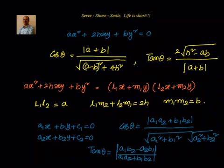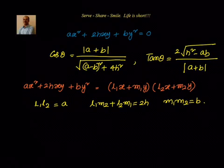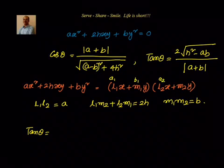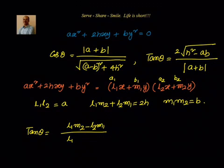Comparing our lines with the general form, we have a1 = l1, b1 = m1, a2 = l2, b2 = m2. We will take tan θ as it is easier. So tan θ = (a1·b2 - a2·b1) / (a1·a2 + b1·b2) = (l1·m2 - l2·m1) / (l1·l2 + m1·m2).